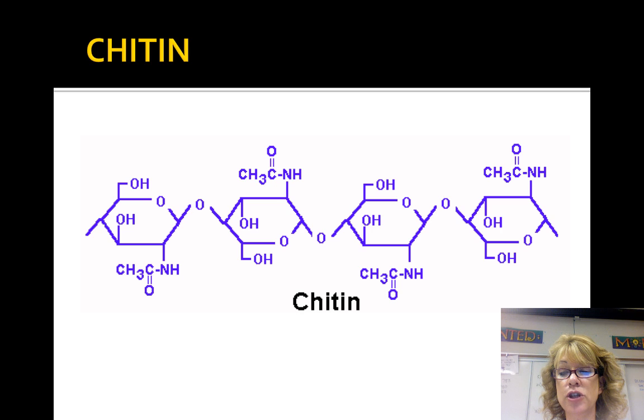Chitin contains nitrogen. It is a polysaccharide that makes up the exoskeletons of arthropods like insects, spiders and crustaceans and the cell walls of fungi.